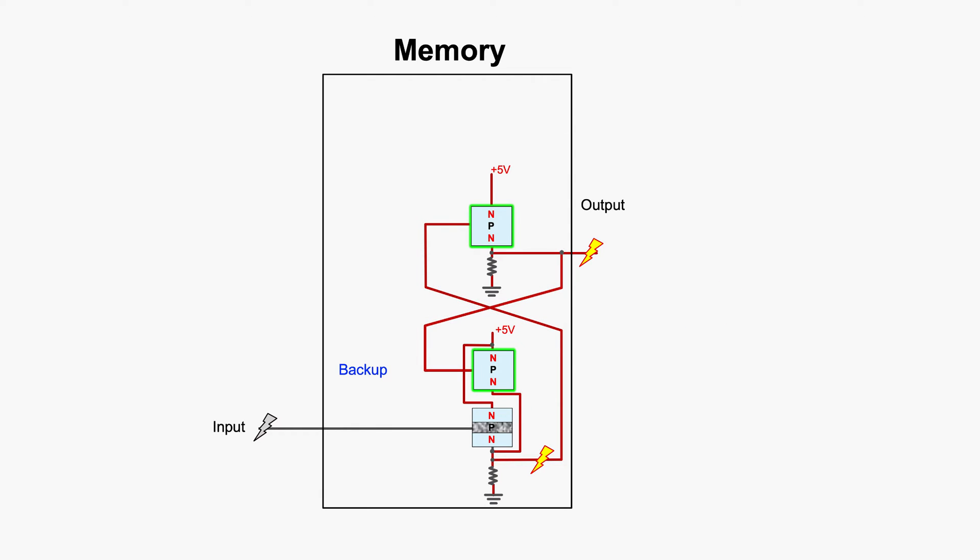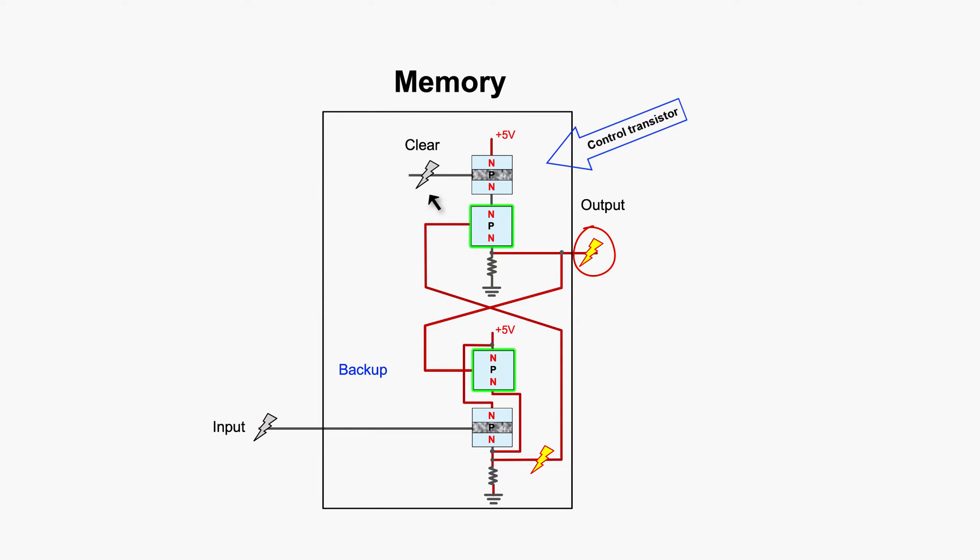But what if later on you want to store a low voltage output? We need to be able to erase this high voltage output. To clear it, we need to add a control transistor, connect it to the output transistor. Applying low voltage to it, the output will become low. Turning off the feedback.